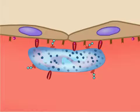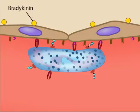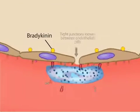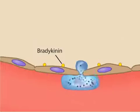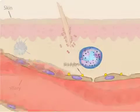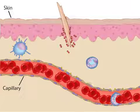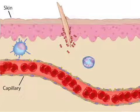Damaged tissue cells in the area of inflammation release bradykinin, a 9-amino acid polypeptide that helps loosen the tight junctions between endothelial cells. Neutrophils can now initiate extravasation, in which they squeeze through the loosened endothelial wall and into the tissues where they can help macrophages attack the invading microbes.